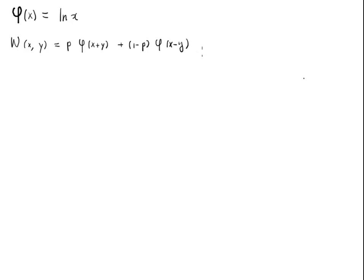That's the utility when we win, plus the probability (1 - p) and then the utility of x minus y. Now let's put log x inside, since log x is φ(x). So this becomes p·log(x + y) plus (1 - p)·log(x - y).